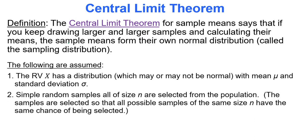If I make a histogram using those sample means, the histogram will actually be bell-shaped — the data will be normally distributed. And as my sample sizes get bigger and bigger, like if I pull in groups of 30, 40, or 50, I can guarantee that the distribution of sample means will be normally distributed. That's what the central limit theorem is telling us.